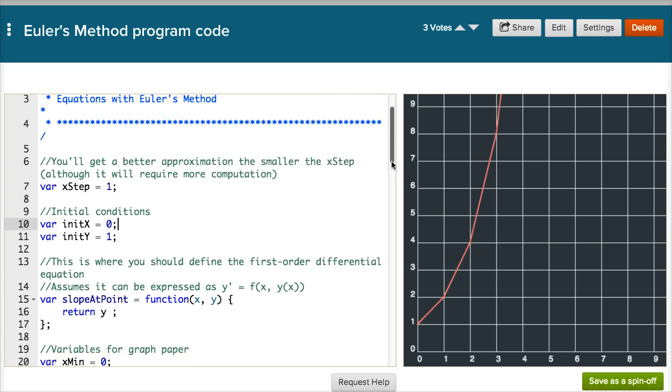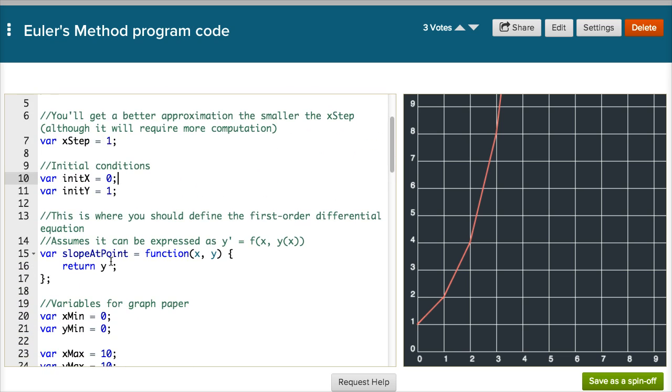And if we go a little bit lower, this is the function slope at point. I guess I could have called it derivative at point as well, or tangent slope at point. Those would have all been legitimate names for this function. But this is really where I define what the differential equation is. And so you see it says, it just says return y right over here. What it's saying is what it's going to return is the slope at that point. And you pass it an x and a y, and then it'll give you the slope of the point. So this is saying that the slope at that point is equal to y, or another way of interpreting it is that y prime is equal to y.